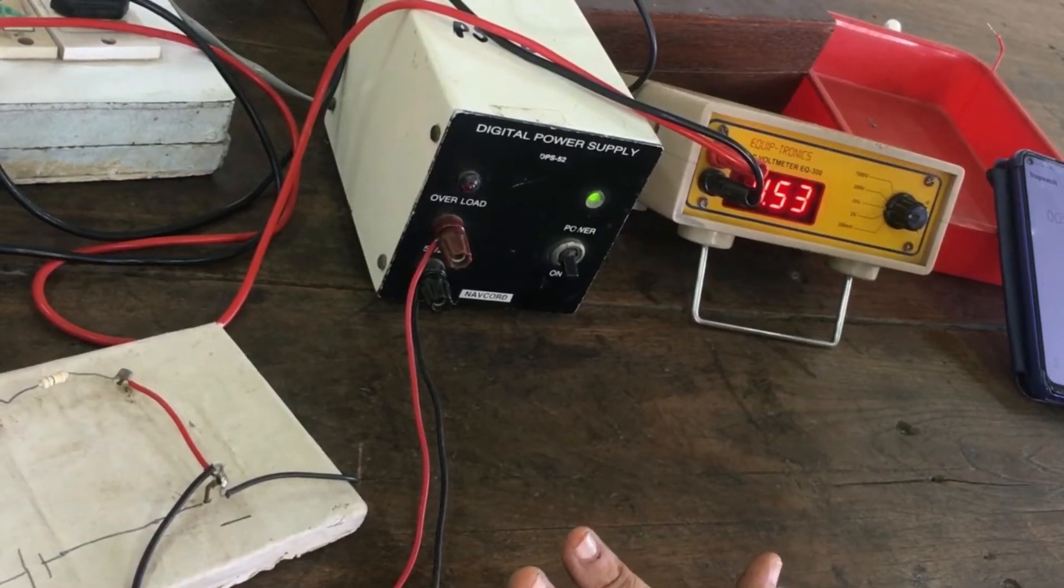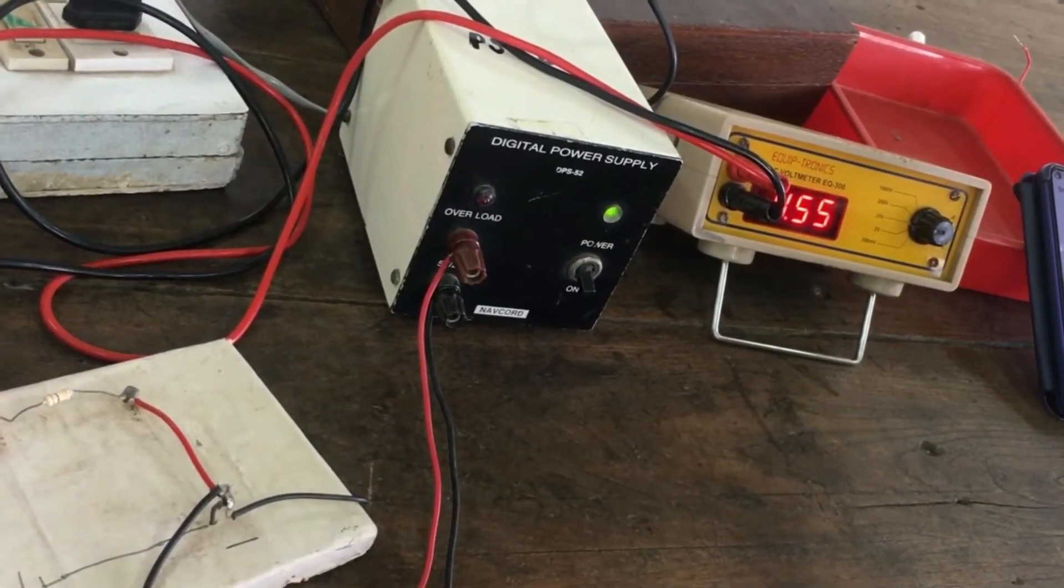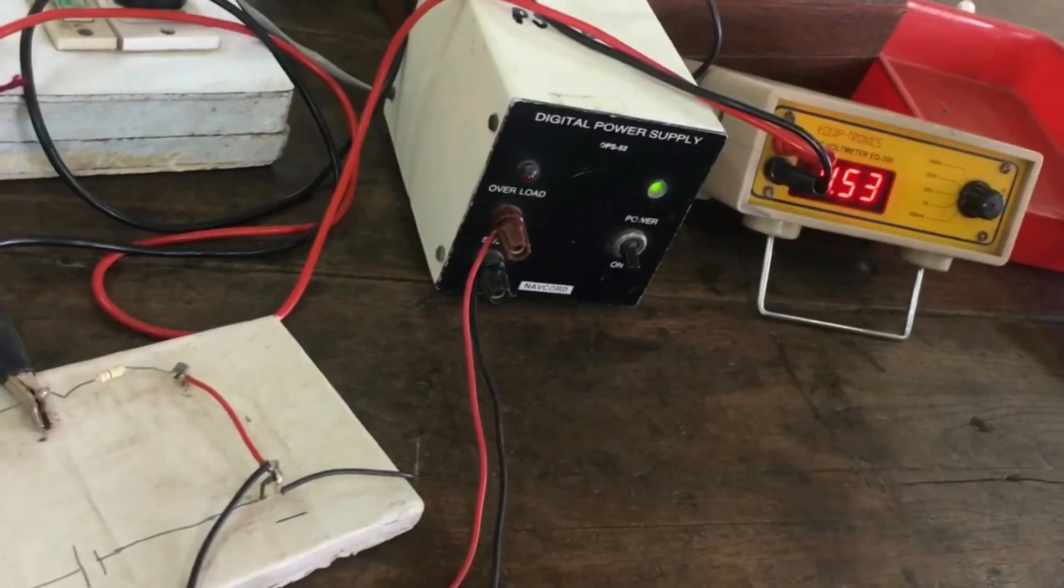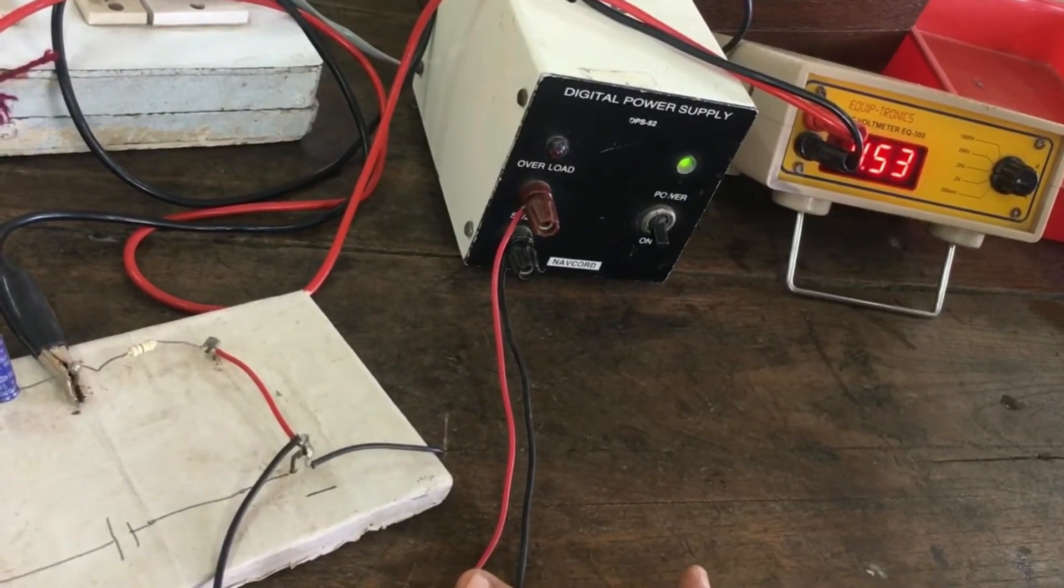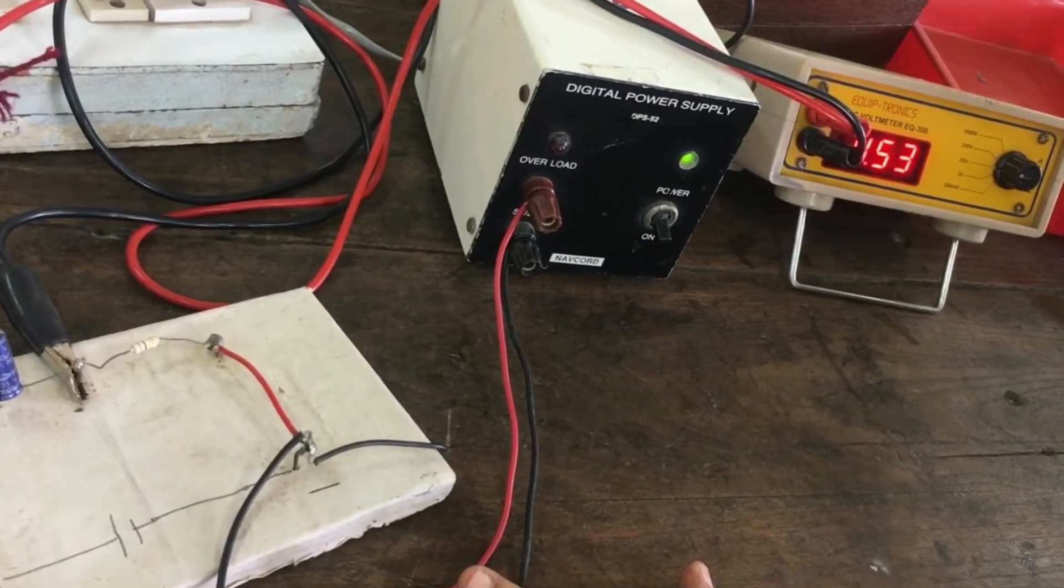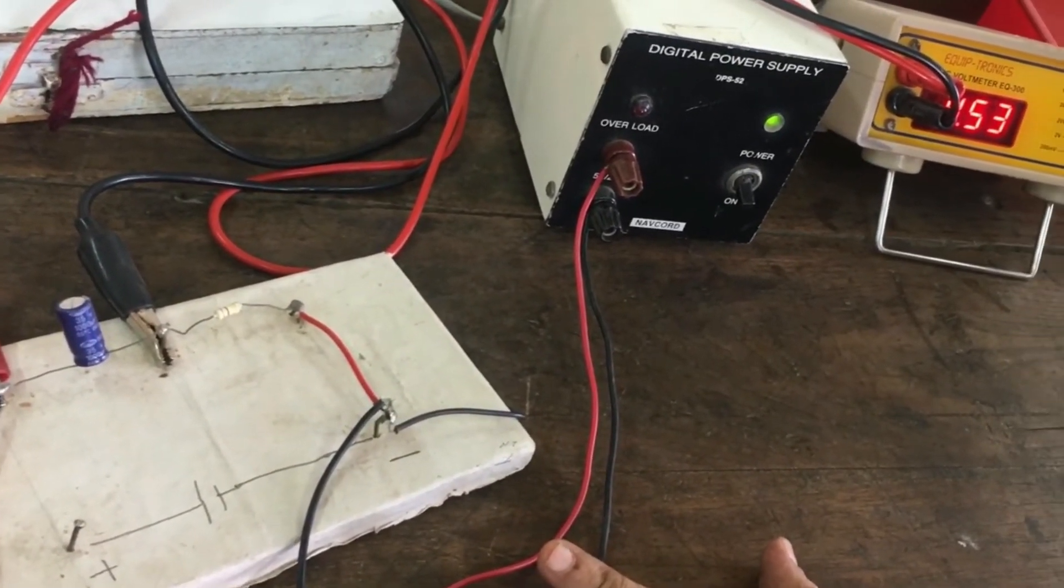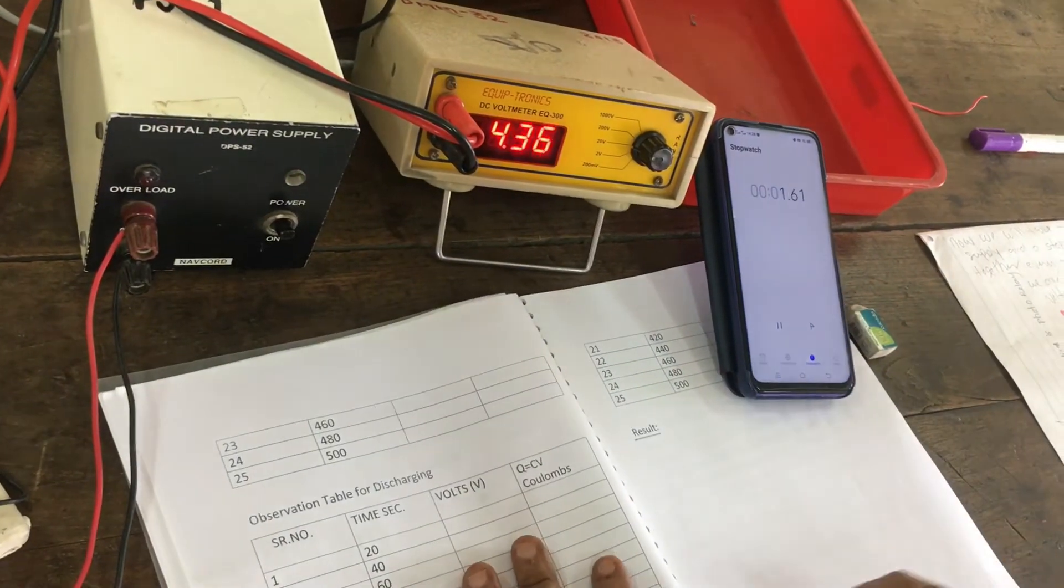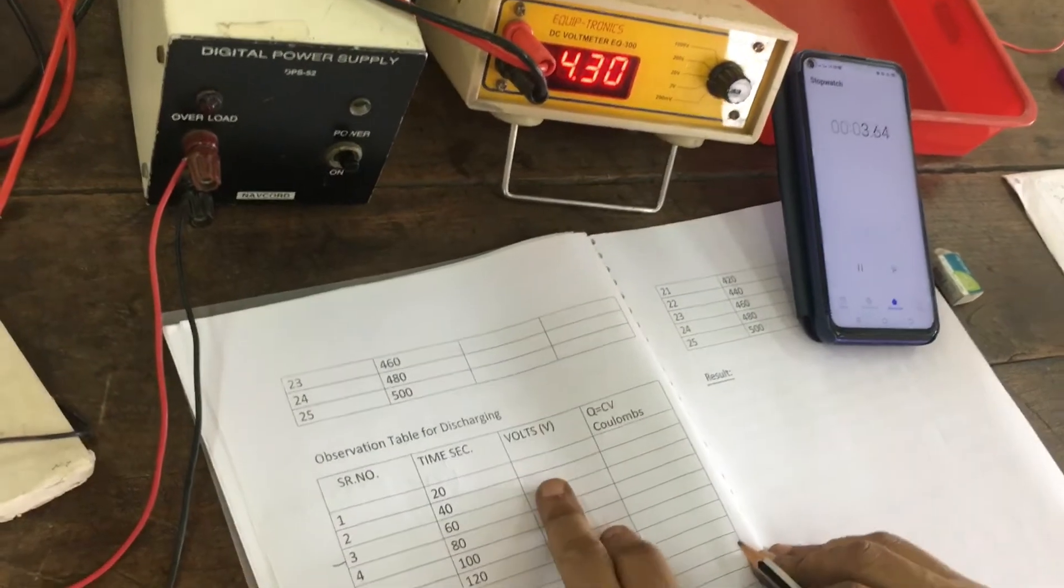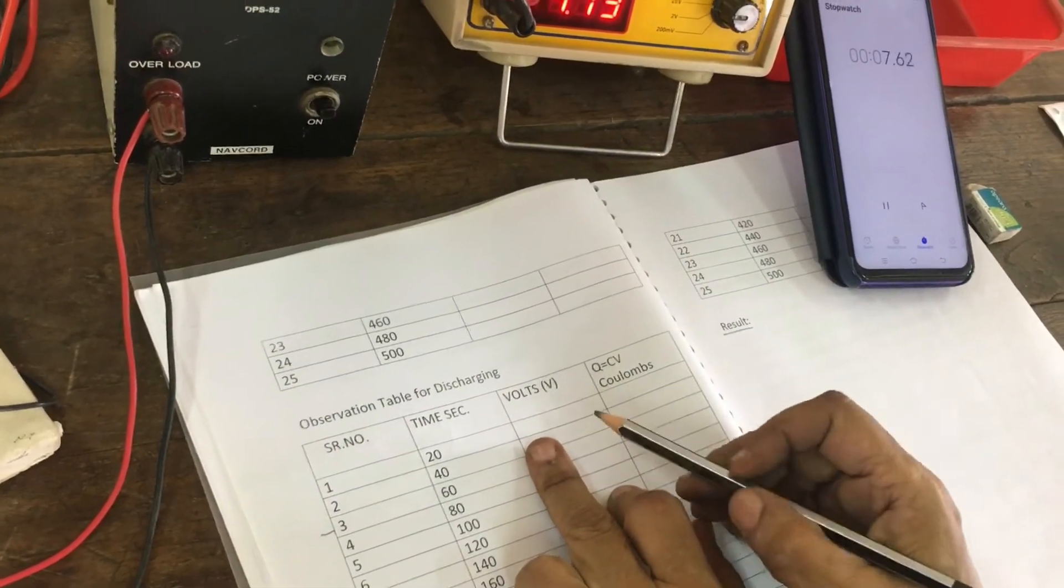Now, the capacitor is fully charged. Now, we have to discharge the capacitor. At the same instant, start stopwatch, record the time and voltage across the capacitor every 20 seconds. When we switch off the power supply, the capacitor is going to discharge. We are measuring every 20 seconds. We will take 3 readings.